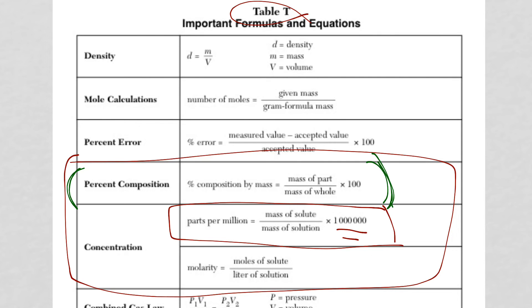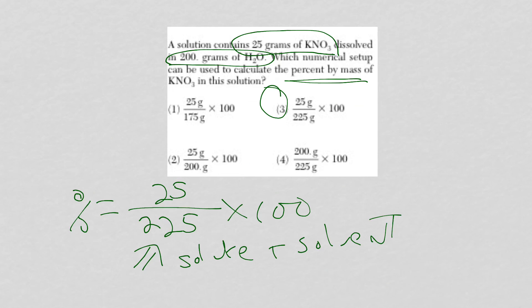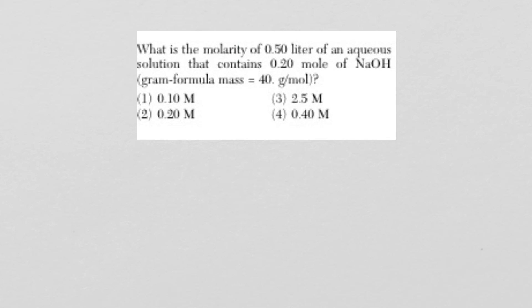And sure enough, here is my molarity formula. Now, the word moles shows up twice on reference table T. And students sometimes confuse the mole calculation up here and they try to use it down here instead. So let's go take a look at the question. This showed up three times from the last four Regents exams. So we're looking to find molarity and we're given liters and moles.